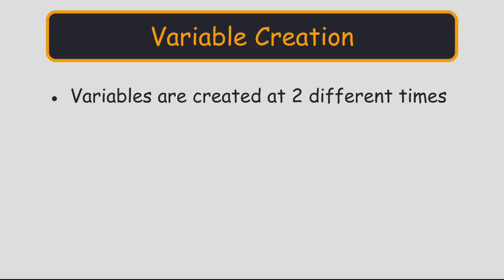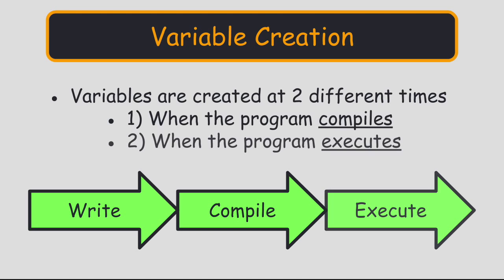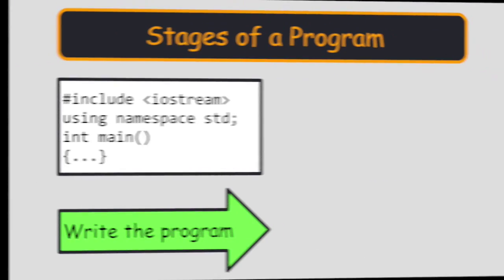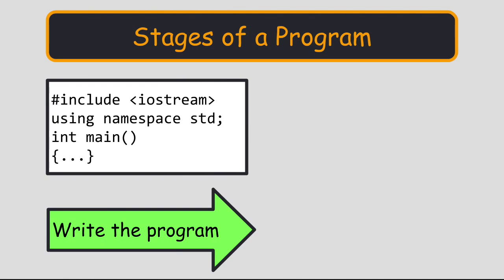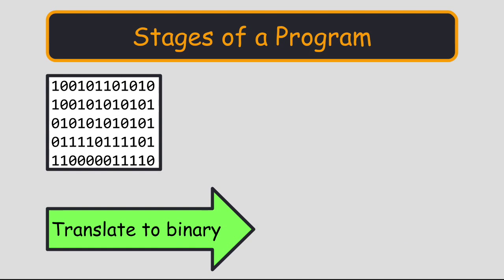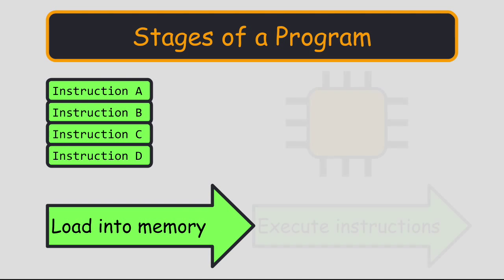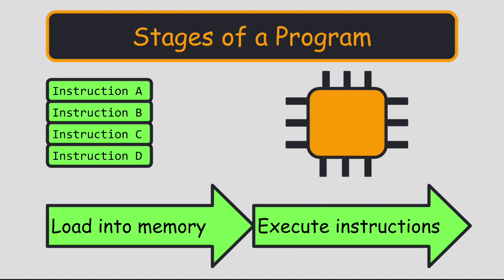In C and C++, there are two times in which variables are created. The first time is when the program compiles. The second time is when the program runs. After you write a program, the compiler translates the code into machine level instructions. Those instructions are then loaded into the computer's memory. Finally, those instructions are fed into the processor, so that they can be executed in sequence.